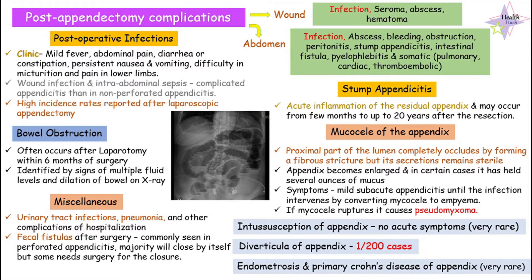Hi guys, in today's topic we'll be speaking about post-appendectomy complications. Under post-appendectomy complications, I have divided them into two types which includes wound complications and abdomen complications. One of the most common complications present in both of them includes infections, and I will speak more about postoperative infections.